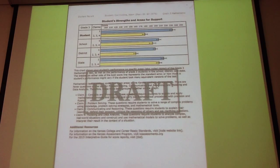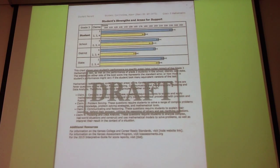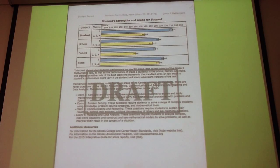Claim one was listed by itself because there was enough in that claim to do that. Looking at the very bottom of the report, claim one is concepts and procedures. Claims two, three, and four are lumped together — problem solving, communication and reasoning, and modeling and data analysis.